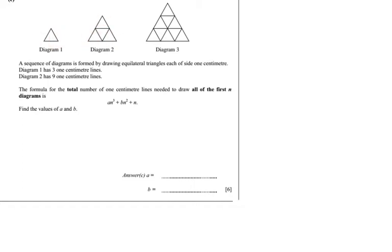Clearly I see some sort of sequence of triangles going on. Diagram 1, 2 and 3, or if you like, term 1, term 2, term 3. Alright, now let's have a look what they are saying. They are telling me a sequence of diagrams is formed by drawing equilateral triangles each of side 1 cm. So all the triangles, all the sides are the same equilateral triangles and they are all 1 cm apparently. Then they continue to say diagram 1 has 3 cm lines. Now let's have a look if that is indeed true. So 1, 2, 3 and of course it's a triangle so that makes sense.